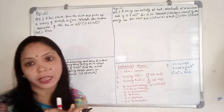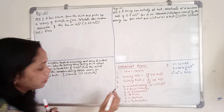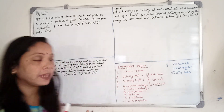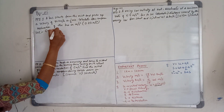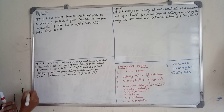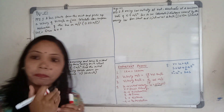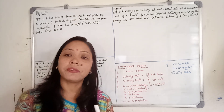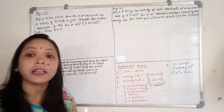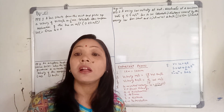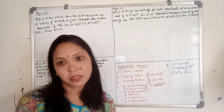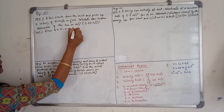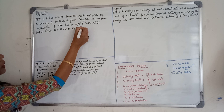The bus starts from rest, which means initial velocity U equals zero. It picks up a velocity — since the velocity increases, that final velocity V equals 90 kilometers per hour.